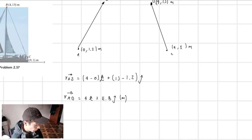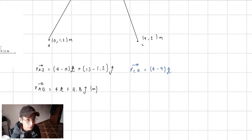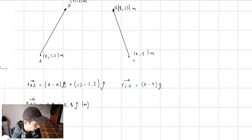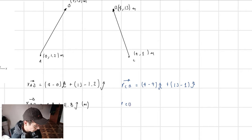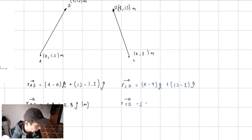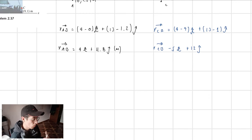For the other vector, which is vector R_CB, this is equal to 4 minus 9 along the i-direction, plus 13 minus 1 along the j-direction. So R_CB is going to be equal to minus 5 along the i-direction, plus 12 along the j-direction. Right there we have our vectors.